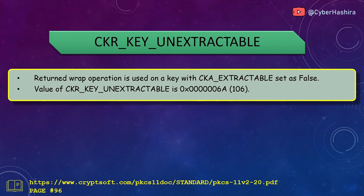CKR_KEY_UNEXTRACTABLE is returned when an attempt is made to wrap a key that has the CKA_EXTRACTABLE attribute set as false. Its value is 0x6A and can be read about on page 96.